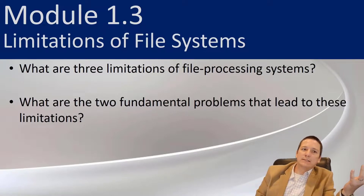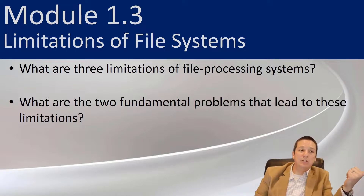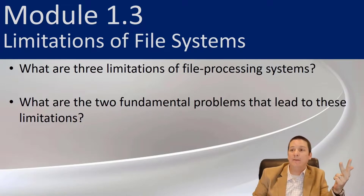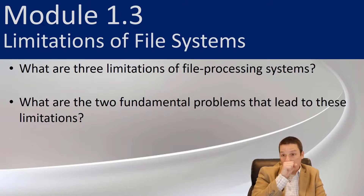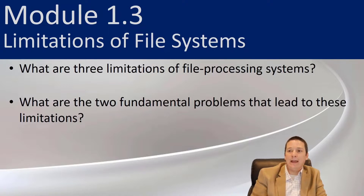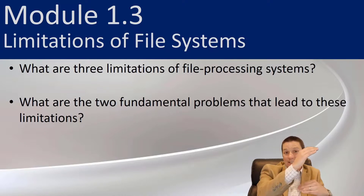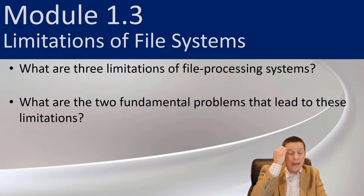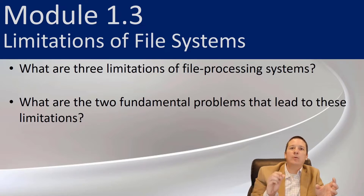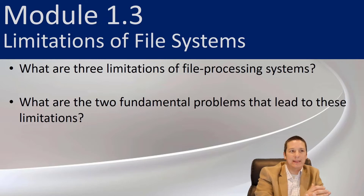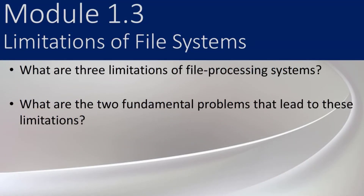To summarize: the three limitations of file processing systems are data integrity, standards, and flexibility — it's more difficult to change your data structure because you have to do it in the application rather than in the DBMS. The two fundamental problems driving all of this are the lack of integration of data — having separate data stores instead of one integrated data store — and the lack of separation between the data and the application. We want to define what the data looks like in the database, not in the application. That's what gives us our flexibility.